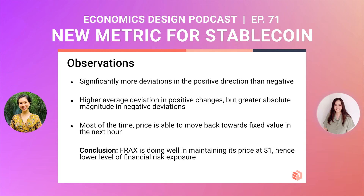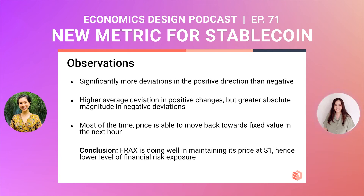Even for the 34% of the time where the price is not pulled back immediately, it is put back within the next two or three time frames. So the algorithm, together with the supply and demand mechanism and the USDC reserve, is doing a good job in maintaining the value of FRAX at one USD. In summary: more deviations occur in the positive direction than negative, there is a higher average deviation in the positive direction but a lower maximum magnitude, and most of the time the price is moved back to the fixed value within the next hour. This indicates FRAX is doing a good job, and from a price deviation perspective, the level of financial risk exposure for FRAX can be considered relatively low.